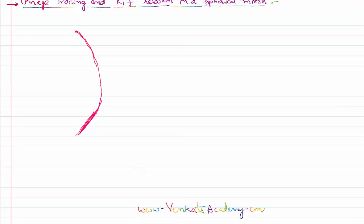Let us consider this as the pole of that mirror, and this is the center of curvature. The line passing through the pole as well as the center of curvature is called the principal axis. Somewhere along it, let's assume a principal focus is there. Let us keep an object somewhere. This is an object. First of all, we need to see its image — let us try to find out. For that, there are rules called image tracing.